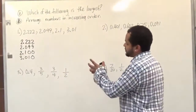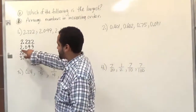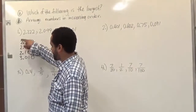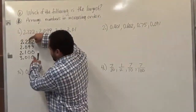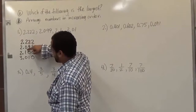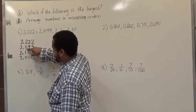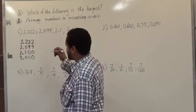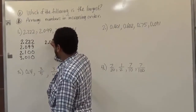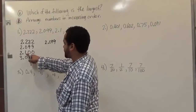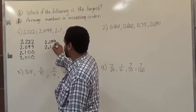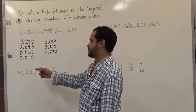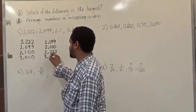Now if we had to arrange these numbers in order, the smallest number here is 2,099. We look at the first position and see that 2 is the smallest number on this list — we have three 2's. Out of those, we look at the next position, and from 0, 1, and 2, the order will be: 2.099 first, then 2.100, then 2.222. And the last is 3.010, the one with 3 in the first place.